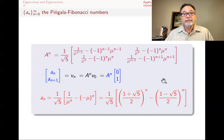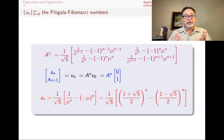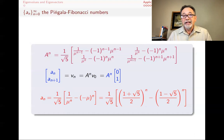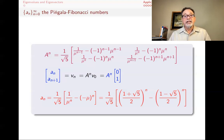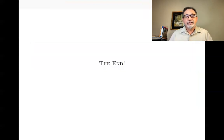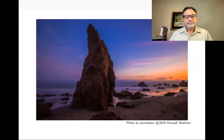This is a surprising formula: the sequence was so simple — start with 0 and 1, just keep adding — yet the formula involves square root of 5. And it's not even obvious that plugging in, say, n=47 gives an integer — but it does, because you get the 47th term of the Pingala-Fibonacci sequence. So this was an application of diagonalization to linear recurrence relations, and you can solve similar problems in similar ways. This is the end of this lecture — I will see you in the other videos.